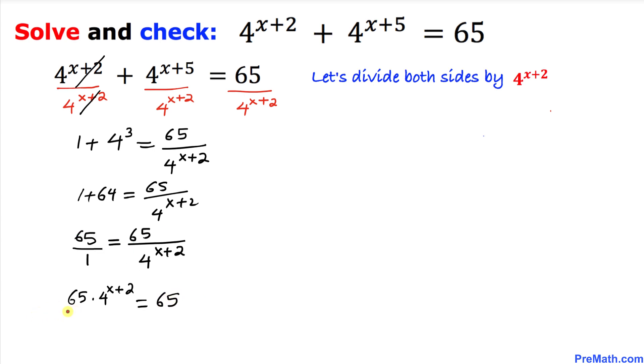Now let's go ahead and divide both sides by 65. So once we do this, these cancel out and we end up with 4^(x+2) = 1.